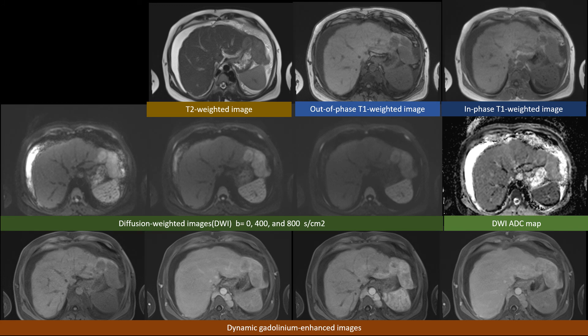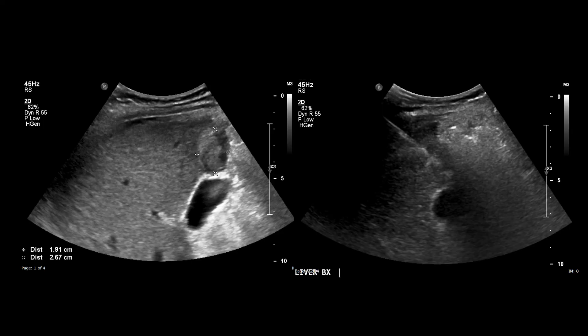The same applies for the lesion in the left lobe. We see it in the pre-contrast phase; its enhancement is more delayed than the right lobe lesions, enhancing on the second image after injection of contrast medium. We can see that the lesions are in fact three, and then they wash out. Ultrasound-guided biopsy of the lesion close to the gallbladder proved hepatocellular carcinoma.